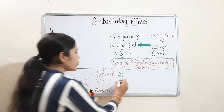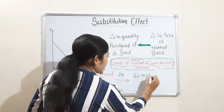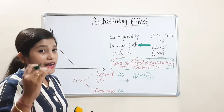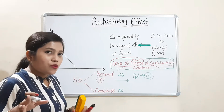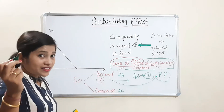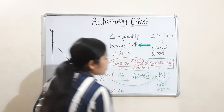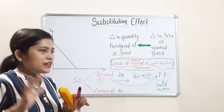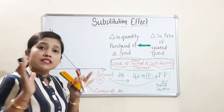Now suppose the price of bread has been decreased from 15 to 10. When price decreases, we can purchase more bread because the price has declined and our purchasing power — that is real income — has increased. So here our real income has increased and that is why we can purchase more bread. But this is what I have explained as price effect; we are not dealing with that concept now.